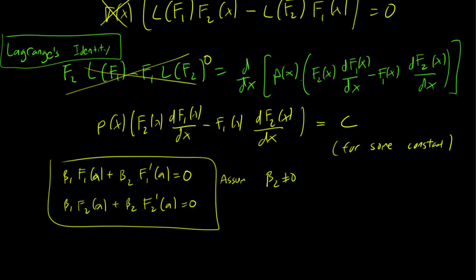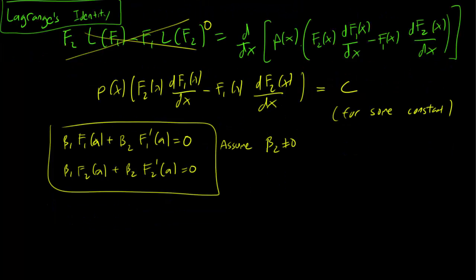The case where beta2 is 0, we're going to cover that in your homework, and this just gets us that f1 prime a is equal to minus beta1 over beta2 f1 a, and f2 prime a is equal to minus beta1 over beta2 f2 a. Alright, cutting my a's and b's mixed up there, but here are the right expressions.